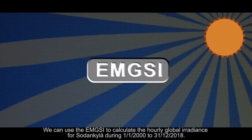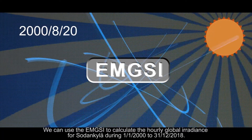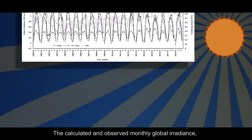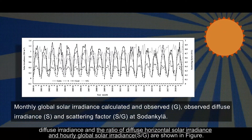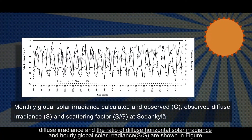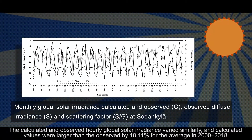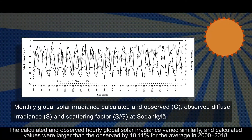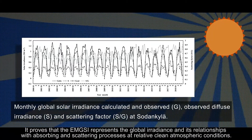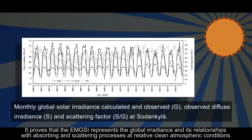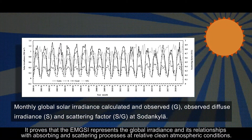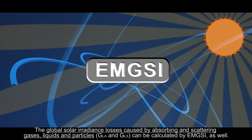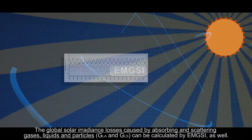We can use the EMGSI to calculate the hourly global irradiance for Sodankyla during January 1, 2000 to December 31, 2018. The calculated and observed monthly global irradiance, diffuse irradiance, and the ratio of diffuse horizontal solar irradiance to hourly global solar irradiance are shown in the figure. The calculated and observed hourly global solar irradiance varied similarly, and calculated values were larger than the observed by 18.11% on average for 2000 to 2018. This proved that the EMGSI represents the global irradiance and its relationships with absorbing and scattering processes at relatively clean atmospheric conditions. The global solar irradiance losses caused by absorbing and scattering gases, liquids and particles can also be calculated by EMGSI.